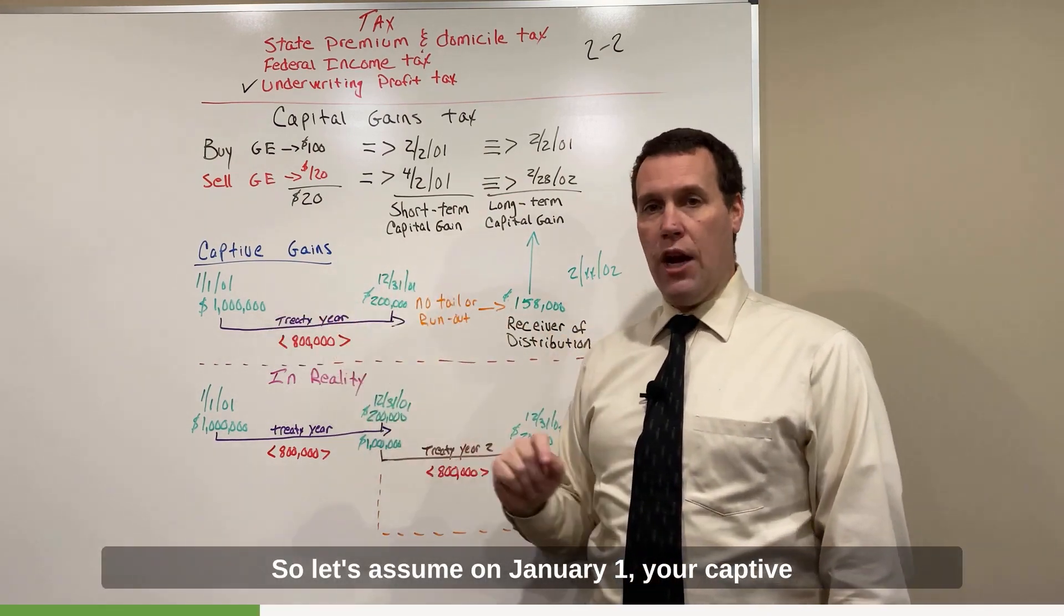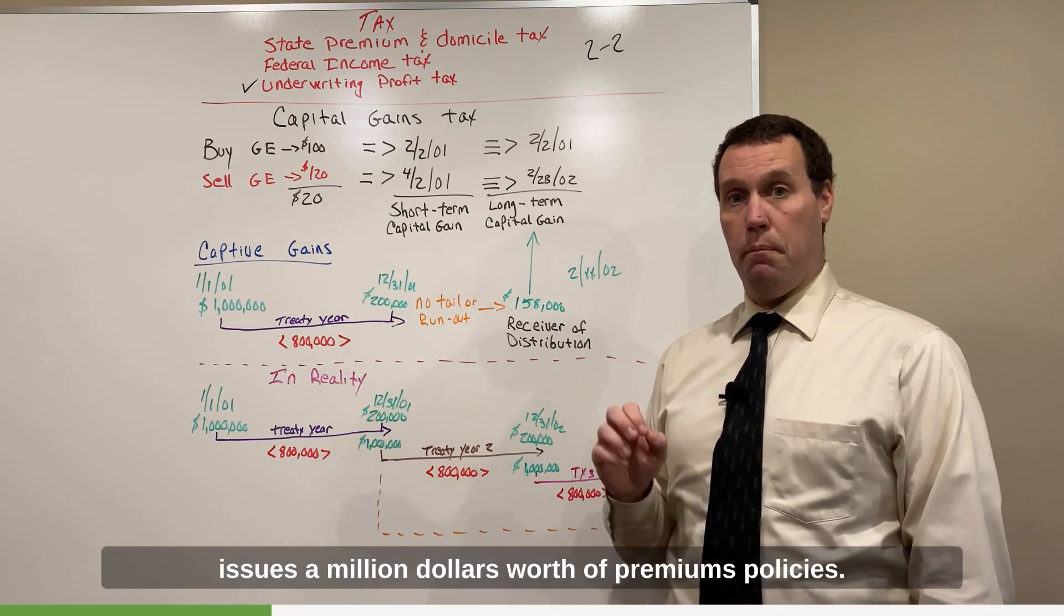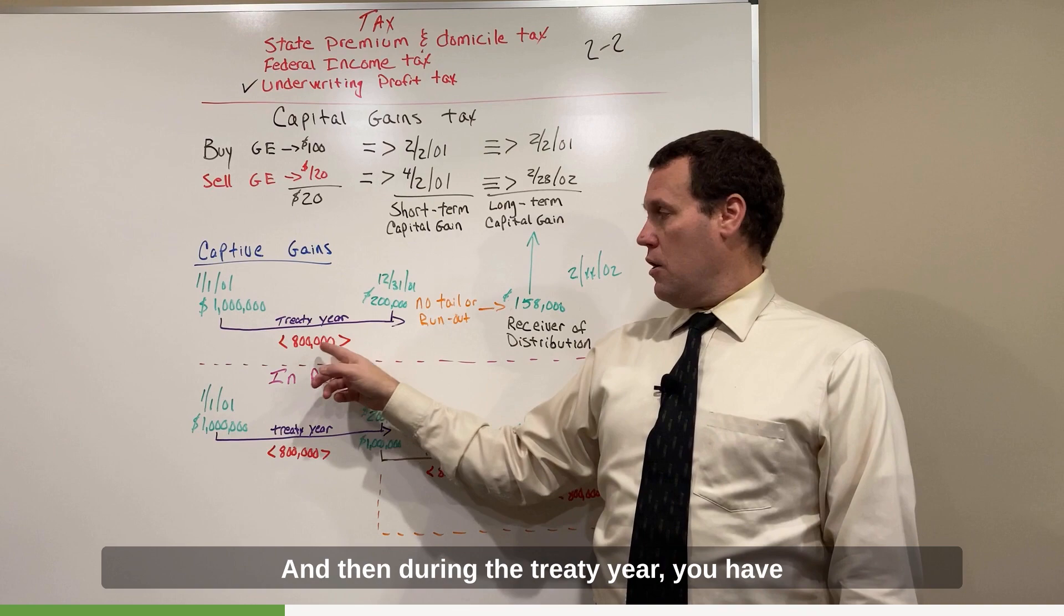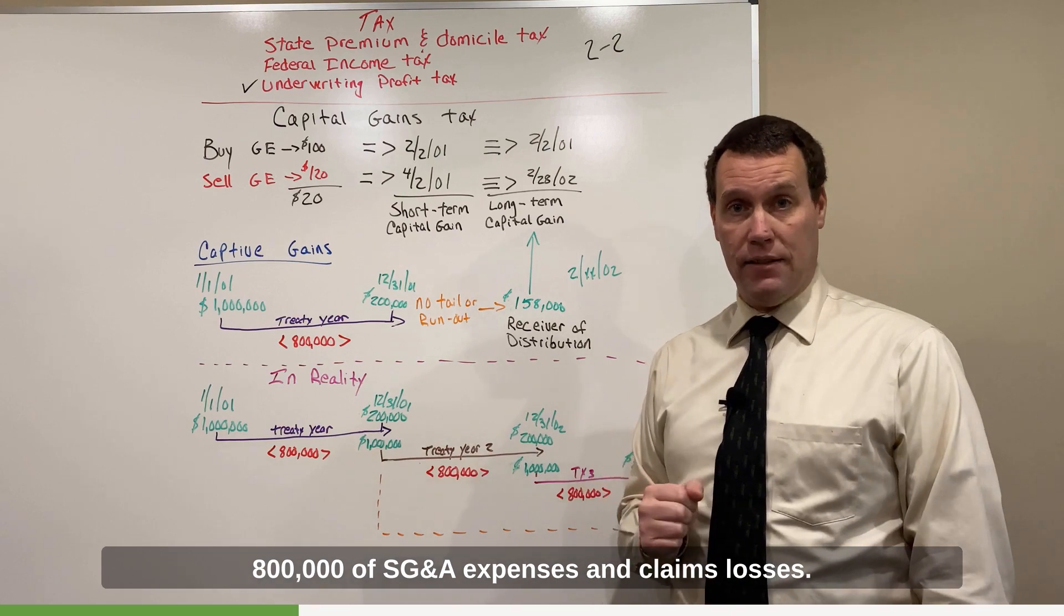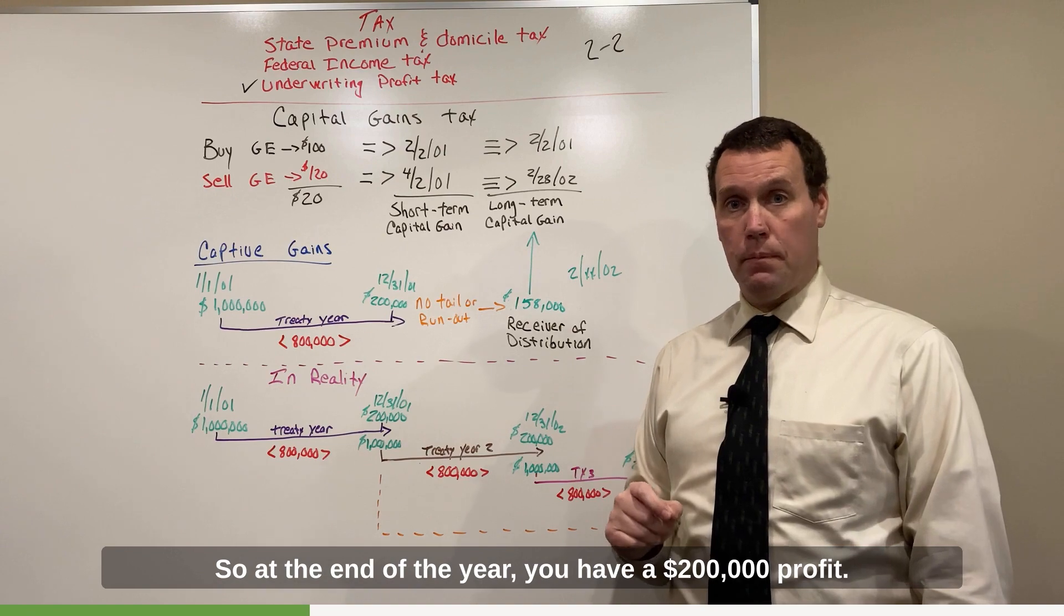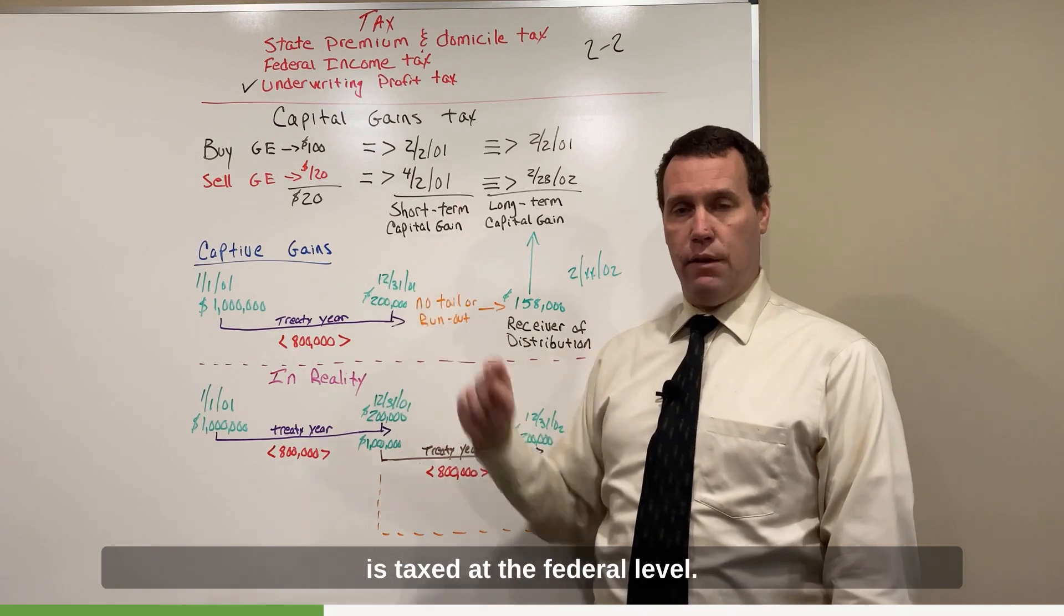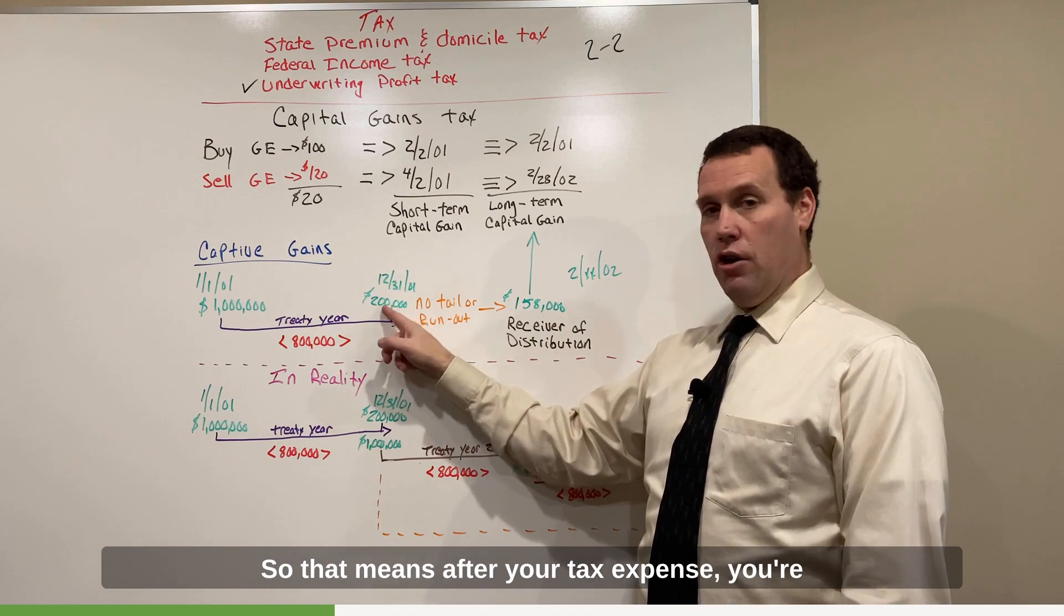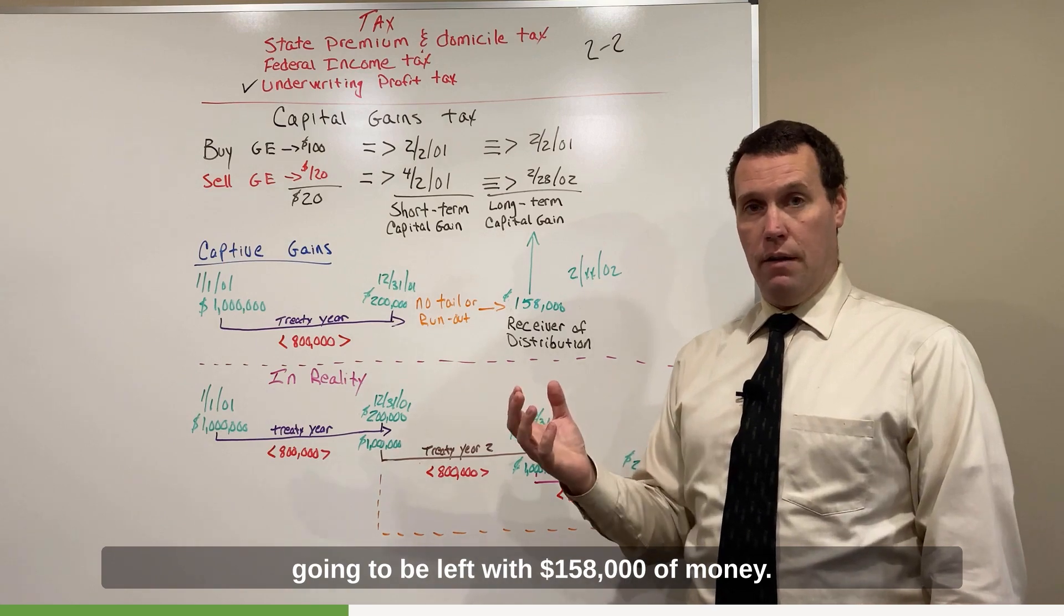So let's assume on January 1st, your captive issues a million dollars worth of premium policies. And then during the treaty year, you have $800,000 of SG&A expenses and claims losses. So at the end of the year, you have a $200,000 profit. Now remember from the last video, this $200,000 is taxed at the federal level. So that means, after your tax expense, you're going to be left with $158,000 of money.